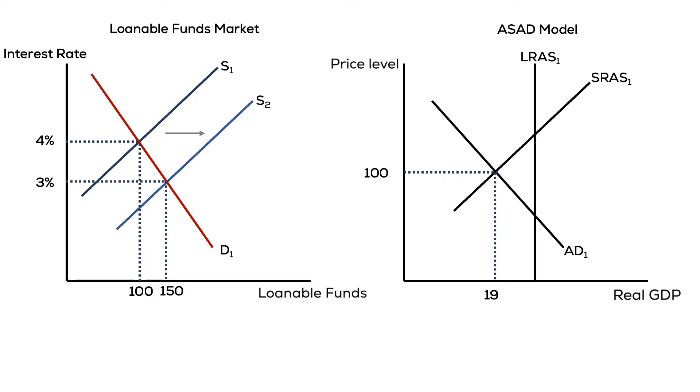This allows consumers and investors to increase their spending. This happens for two reasons. First, it is cheaper to get loans, so the quantity of investment will increase because firms have access to cheaper funds. Second, for consumers, they are sitting on cash. The reduction in interest rates reduces the opportunity cost of spending that money. Since the interest they can earn is lower, they will begin to spend the money, causing consumption to increase.